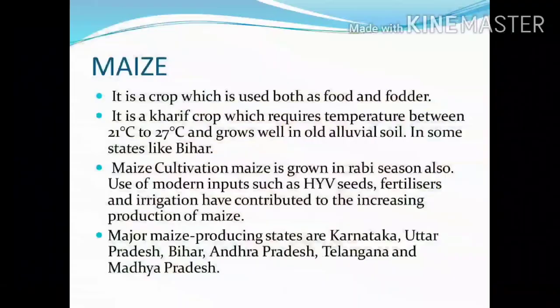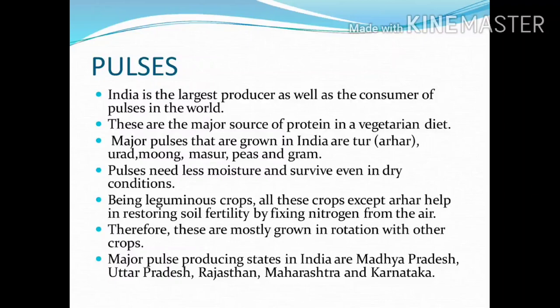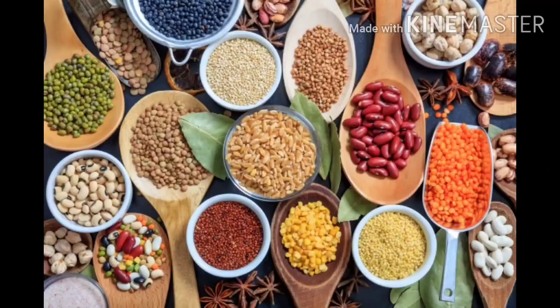Pulses: India is the largest producer as well as the consumer of pulses in the world. These are the major source of protein in a vegetarian diet. Major pulses grown in India are Tur, Urad, Mung, Masur, Peas, and Gram. Pulses need less moisture and survive even in dry conditions. Being a leguminous crop, all these crops except Arhar help in restoring soil fertility by fixing nitrogen from the air. Therefore, these are mostly grown in rotation with other crops. Major pulse-producing states in India are Madhya Pradesh, Uttar Pradesh, Rajasthan, Maharashtra, and Karnataka.